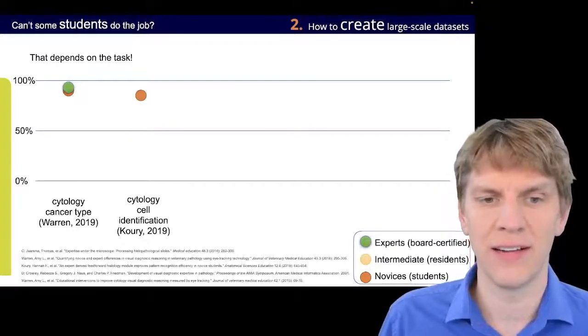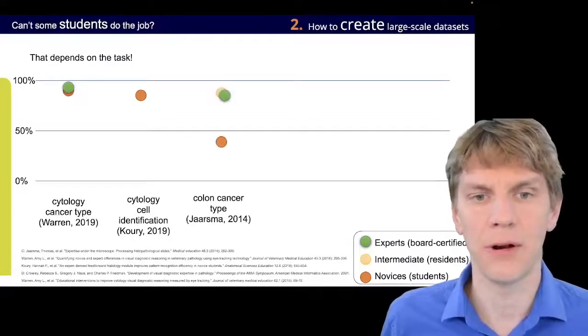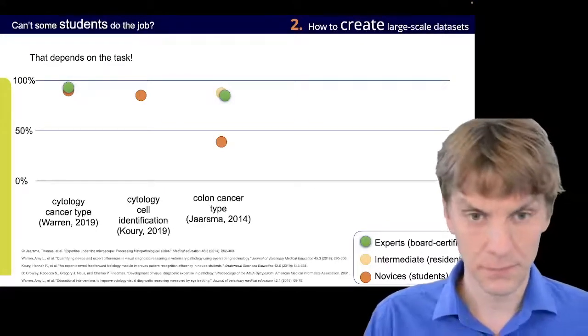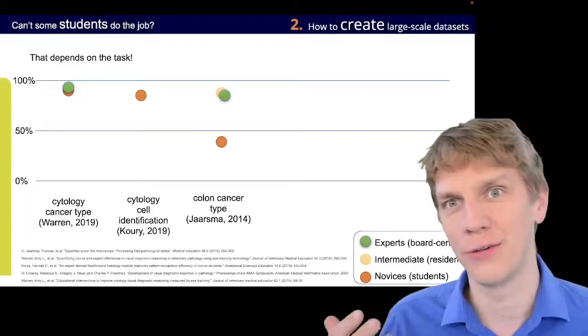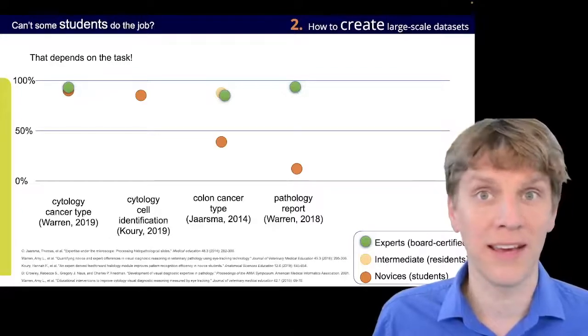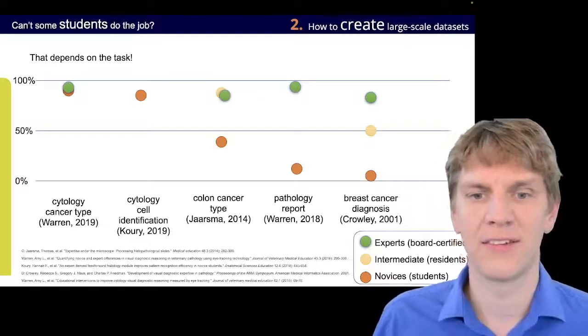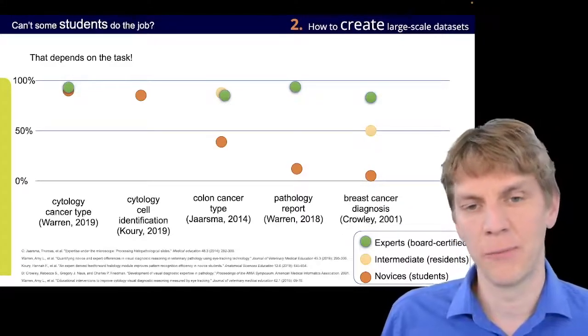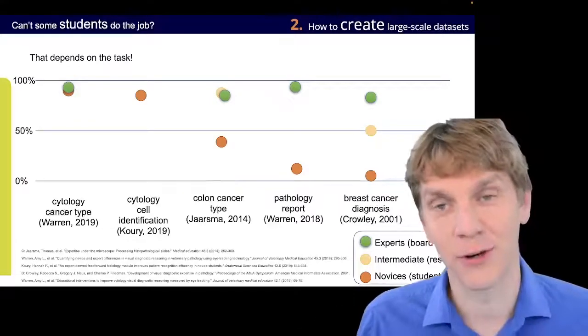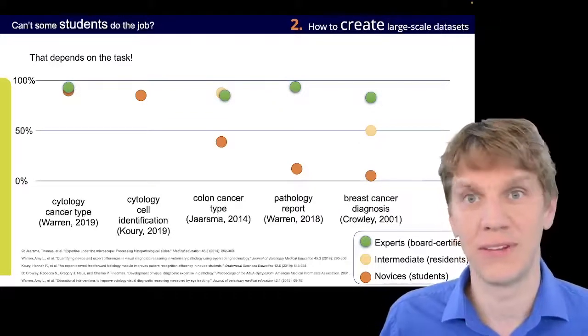Now, moving to other tasks, cytology cell identification was also fairly good in terms of quality. We also have colon cancer type detection, but we already saw a little drop-off. Maybe that also had to do with the study design. And then we also have more complicated tasks like writing a pathology report or writing a complete breast cancer diagnosis. So, we can see that the more complicated the task gets, the more experience is required and the less, of course, it can be done by somebody that has little experience in that job.